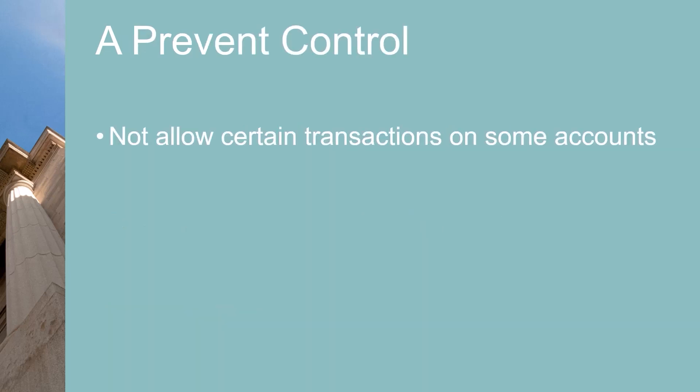A company can also have the bank set rules on accounts not to process certain transactions. For example, it may block any ACH debit transactions. Cards can also be frozen so no transactions can occur on them.